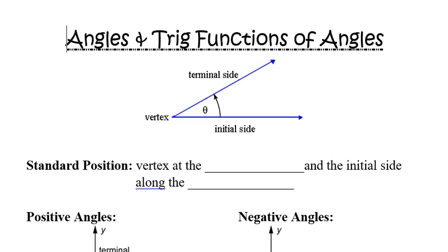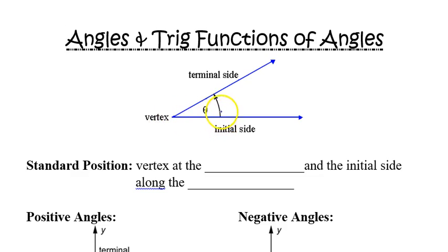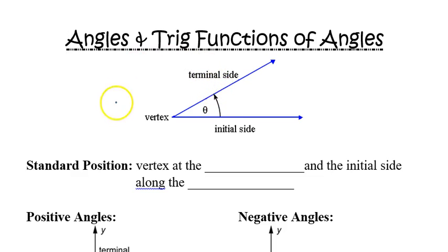This lesson is on angles and trig functions of angles. The first thing we're going to do is look at an angle and talk about the parts of it. When you dealt with angles in geometry classes, you probably learned to identify the vertex. Now we're going to imagine angles that get bigger or smaller — we're going to imagine moving the terminal side while the initial side stays put. Acute angles will be in one range, and as you move it around you'll get obtuse angles and things like that.